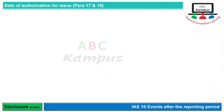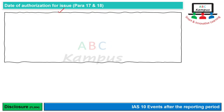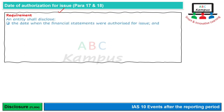Welcome to ABC campaign. हम IAS-10 events after the reporting period में disclosures को discuss करेंगे। पहली disclosure जो हम discuss करेंगे वो है date of authorization for issue से related। IAS-10 की requirement है कि एक entity को disclose करना है वो date जब financial statements authorized हुई for issue.